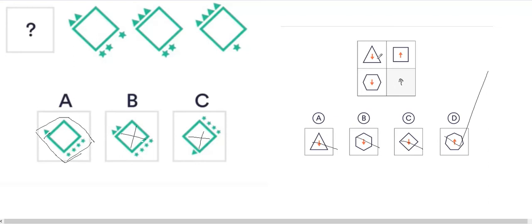To confirm: this shape has three sides, this one has four sides, this one has five or six sides, and this one has seven sides. So each shape on this side has one more edge than the previous one. It also has an arrow in the same direction as the one above it, so D is the right answer. This was a simple question.